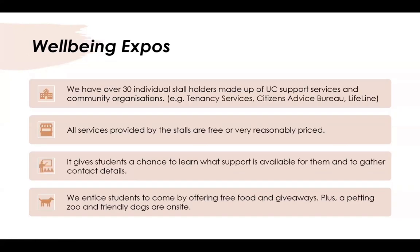The events have grown massively — we now have 30 individual stall holders consisting of UC support services and community organizations such as Tenancy Services, Citizens Advice Bureau, and Lifeline. All the services featured are either free for students or very reasonably priced. It gives students a chance to learn what support is available and how to contact these services if they need them in the future. We entice students to attend by offering free food and giveaways, as well as a petting zoo and friendly dogs.